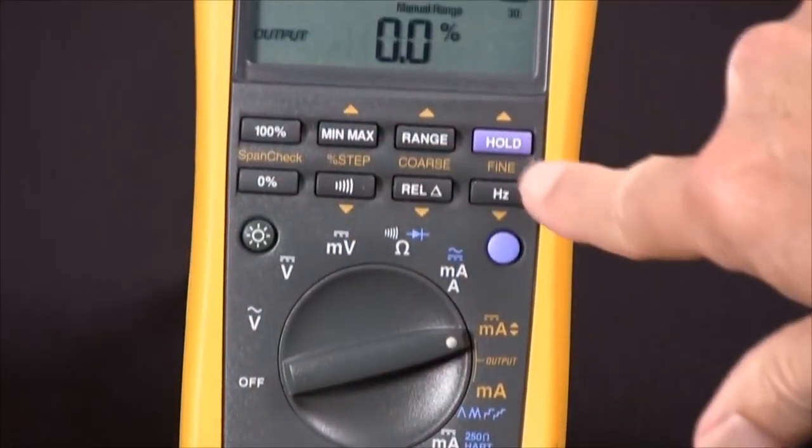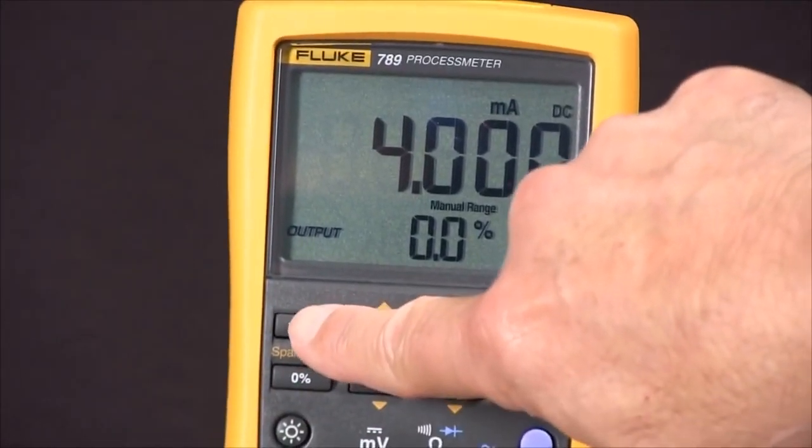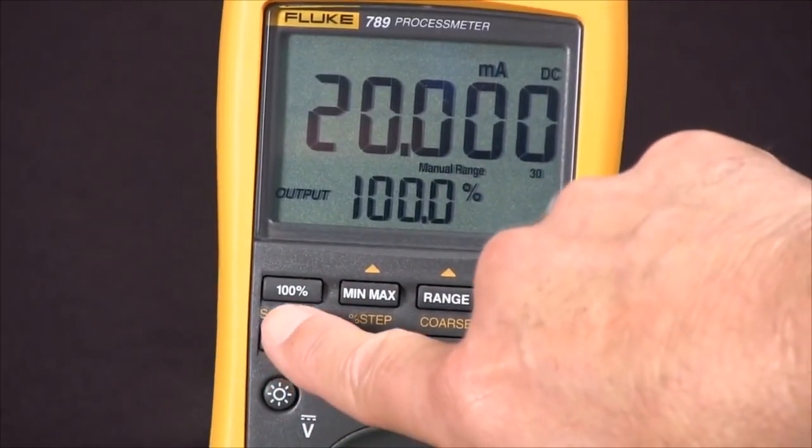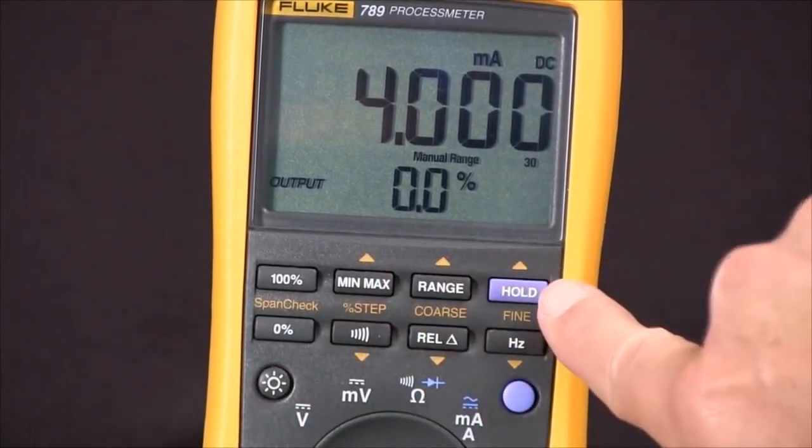We can start over here with the span check and we can go from 0% of span to 20 milliamps, or 100% of span, or zero. And then with these three we can do 25% of span coarse or fine adjustments.